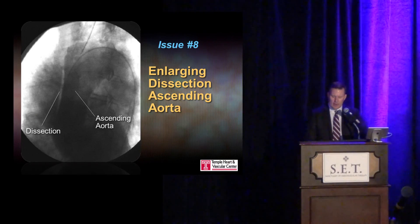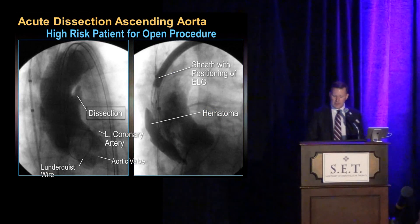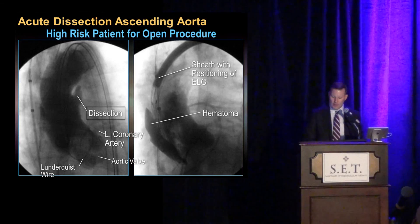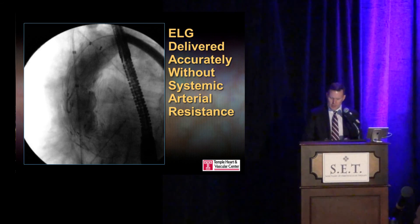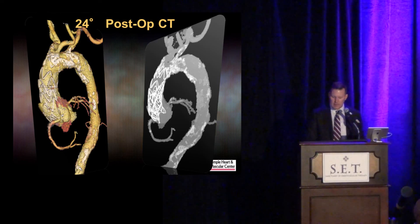What about aortic dissections? Do we need a different device design because of the complexity relative to atherosclerotic aneurysm disease? Here's a patient we treated many years ago with an acute type A aortic dissection who was not a surgical candidate. We elected to treat with an ascending aortic stent graft via transfemoral approach, deploying right at the sinotubular junction. The patient had a 10-centimeter ascending aorta, so we deployed a standard stent graft, achieving good coaptation of the true and false lumen with a good outcome.